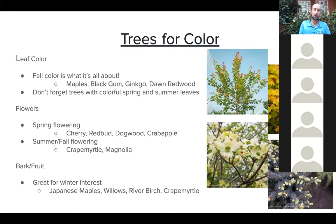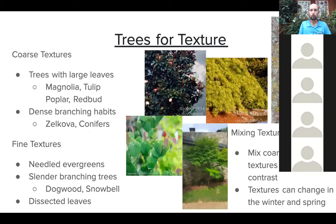Winter interest is an under-considered aspect of planting trees for color. Look at trunks and interesting branching habits. Japanese maples offer winter interest — there's one called Arakawa, which means rough bark, giving a showy bark. Coral bark Japanese maple goes brilliant red in fall. Bihu goes brilliant yellow to orange. Willows tend to have yellow branching. River birch has a peeling paper bark that's really nice in wintertime. Crape myrtle can also look great in winter, especially as they get mature.